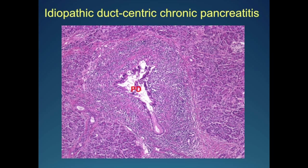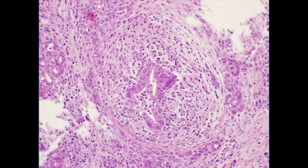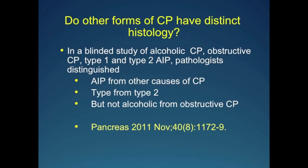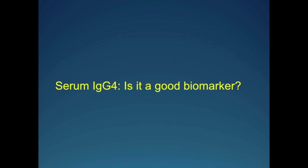This is a classic example of ductal inflammation — epithelial inflammation — leading to damage of the ductal epithelium and often obliteration of the duct. So do other forms of chronic pancreatitis have distinct histology? Have we been missing other forms because we don't know what to look for? In a blinded study of alcoholic chronic pancreatitis, obstructive chronic pancreatitis, type 1 and type 2 — 10 each — we gave it to 14 pathologists. They couldn't tell alcoholic from obstructive CP apart, but AIP was clearly distinguished from the others, and type 1 was distinguished from type 2. The eye doesn't see what the mind doesn't know.